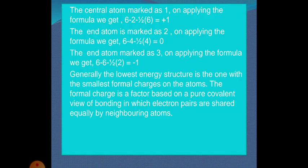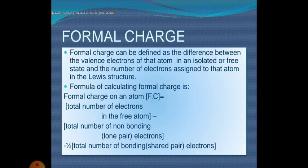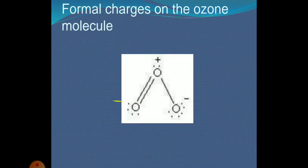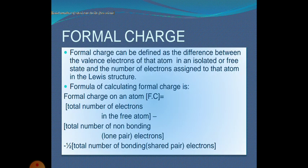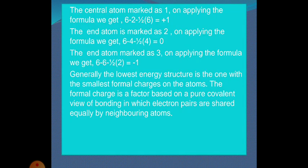For the end atom marked as 3, applying the formula you get 6 minus 6 minus one half into 2. The 6 is the number of lone pair electrons, and 2 is the total number of bonding shared pair of electrons, giving the answer −1. So this is the formal charge environment of the three single oxygen atoms in ozone, giving +1, 0, and −1 respectively.